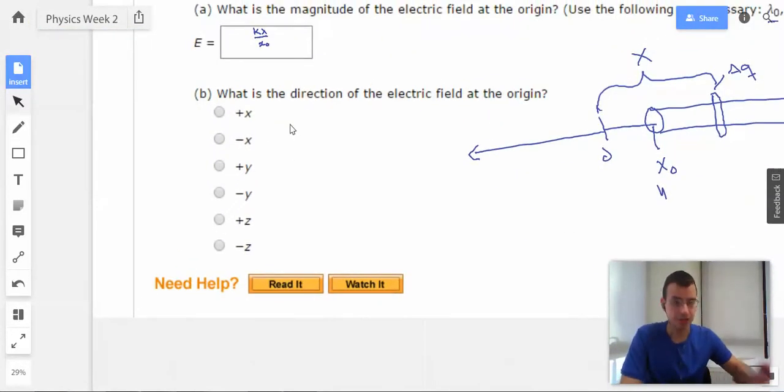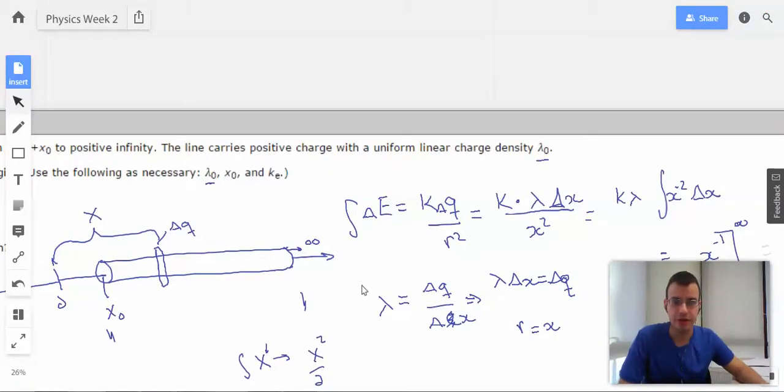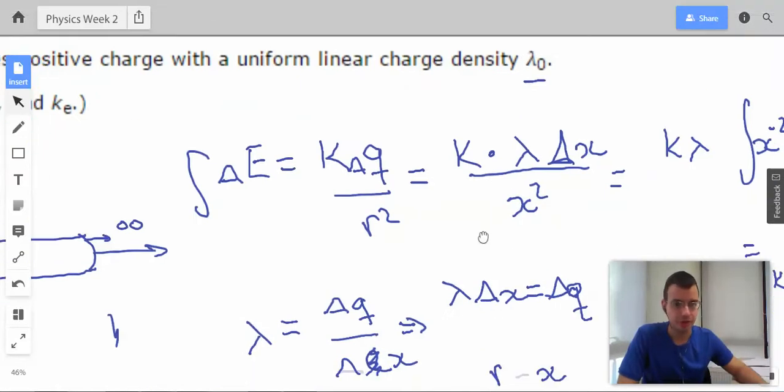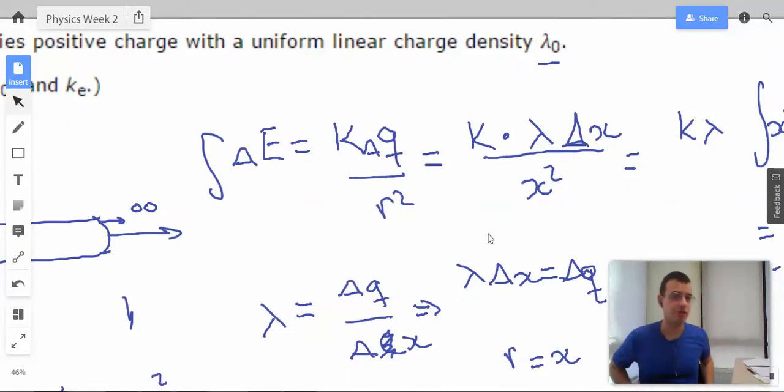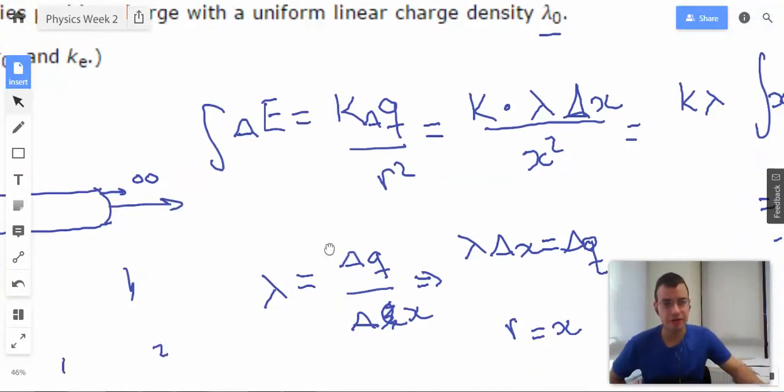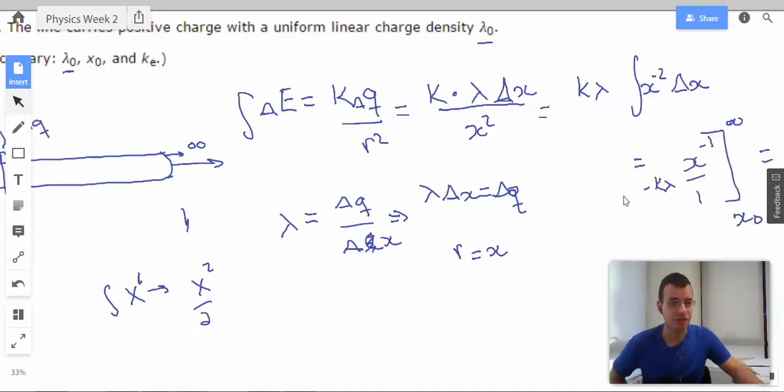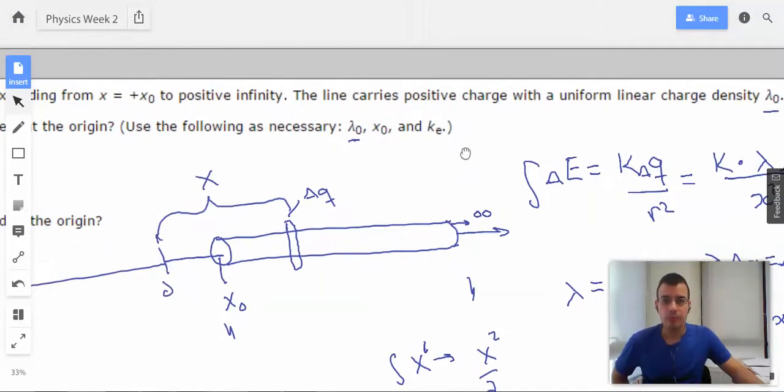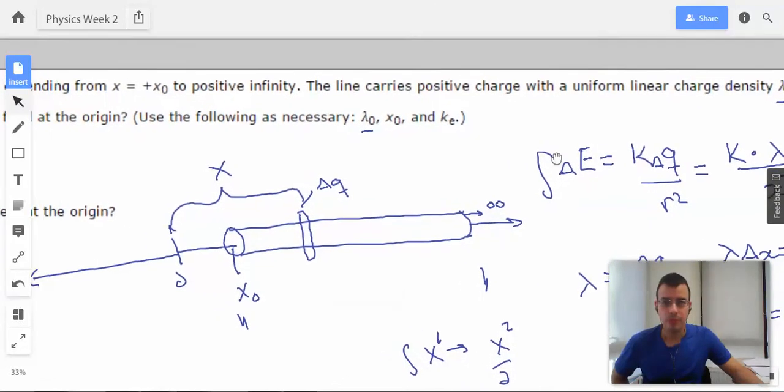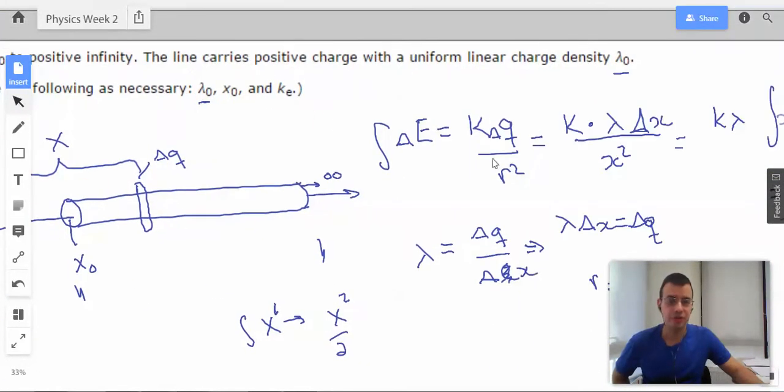So now we need to find the direction of the electric field. So I should probably backtrack a little bit, see what happened there. So no real idea what we're doing. You have lambda naught, so we're probably going to use lambda. So we write out the definition of lambda, linear charge density. If you're using lambda, or if you're finding the electric field, if you're using lambda, you're probably going to use an integral.